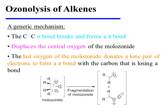This displaces the central oxygen of the molozonide. Finally, the last oxygen of the molozonide donates a lone pair of electrons to form a pi bond with the carbon that would otherwise have lost a bond. This yields two fragments: a carbonyl compound — either a ketone or an aldehyde — and this unusual doubly charged fragment. These two fragments will quickly recombine.